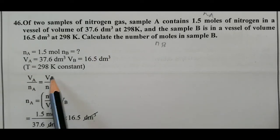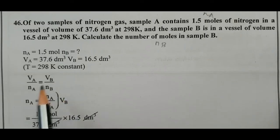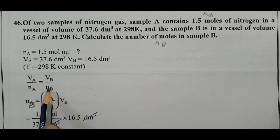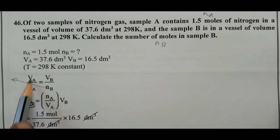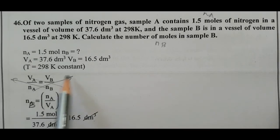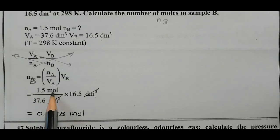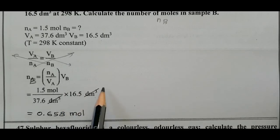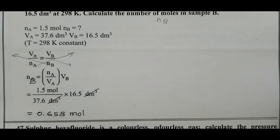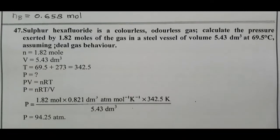By Avogadro's Hypothesis: VA/NA = VB/NB. Substituting: NA = 1.5 moles, VA = 37.6, VB = 16.5. Decimeter cube units cancel. Solving gives NB = 0.658 moles — that is the number of moles of sample B.